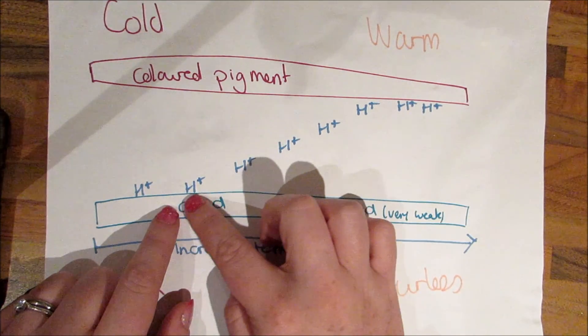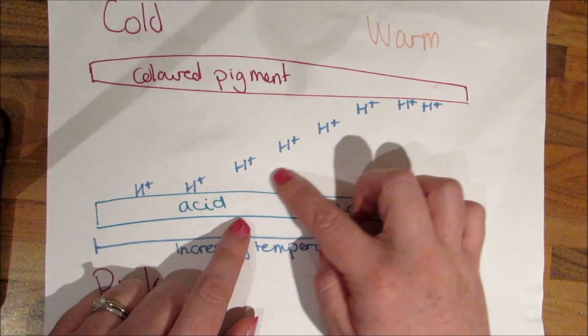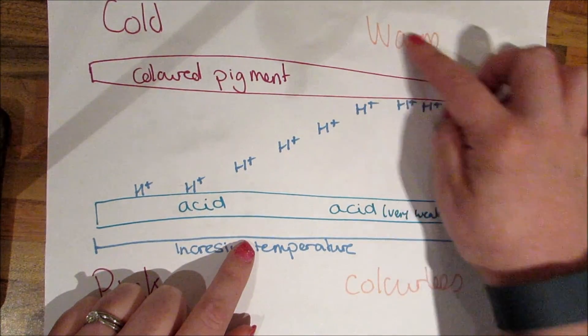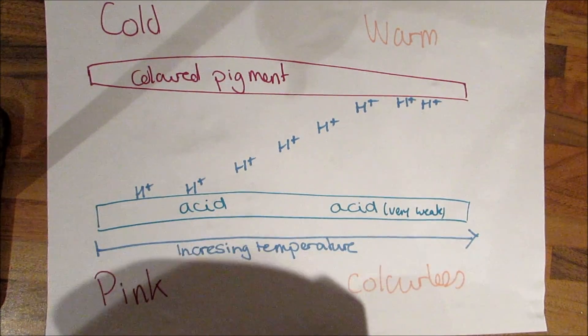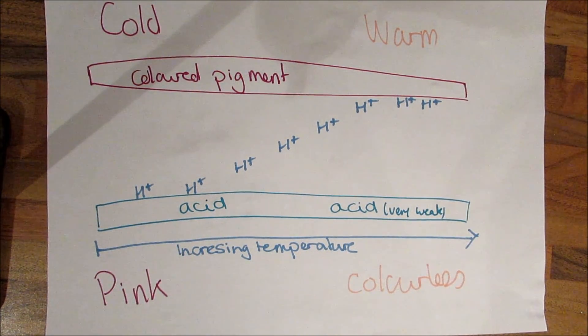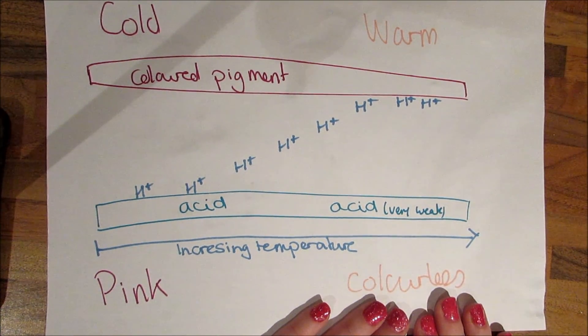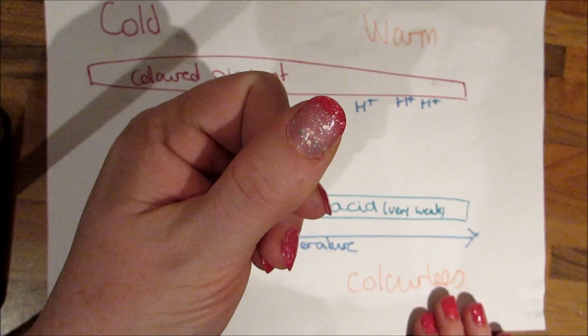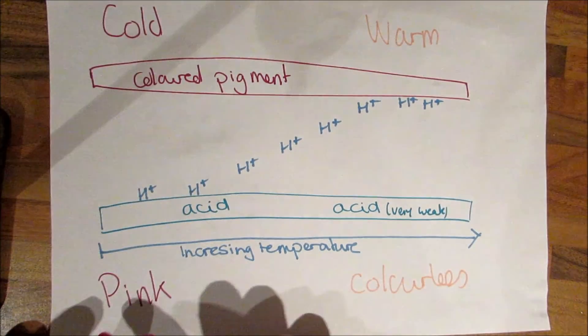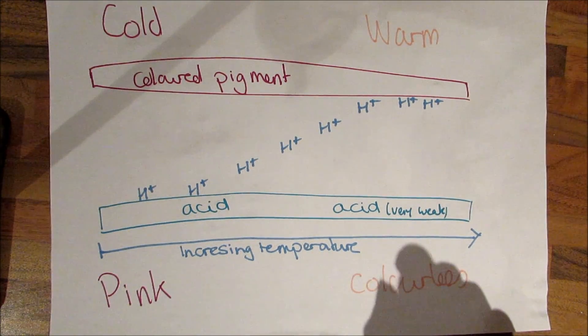As the temperature increases, the hydrogen ions move away from the acid. They move up to the colored pigment and kind of capture it, stopping it from being colored anymore. Which is why when it's warm they are colorless, and when they are cold it is pink. You see my thumb is starting to go again.